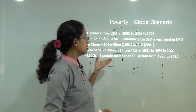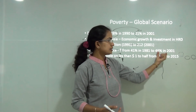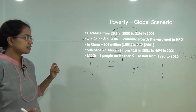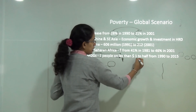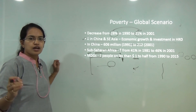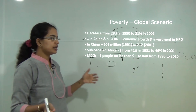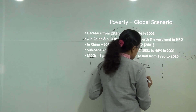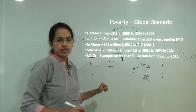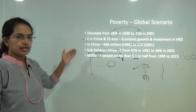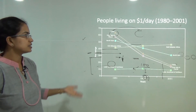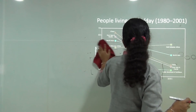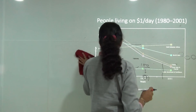Sub-Saharan Africa has shown an increase in poverty. The Millennium Development Goals aim to halve the number of people surviving on less than $1 per day by 2015. A diagram shows people living below the internationally defined poverty line — China has shown a sharp decline, while sub-Saharan Africa has increased. East Asia and the Pacific and South Asia are also improving.